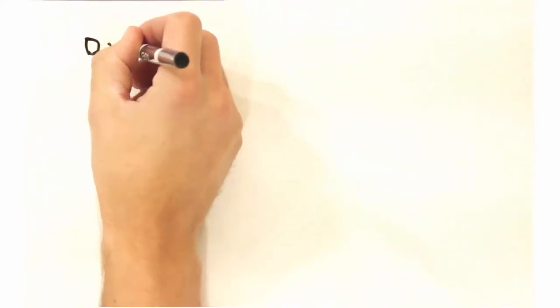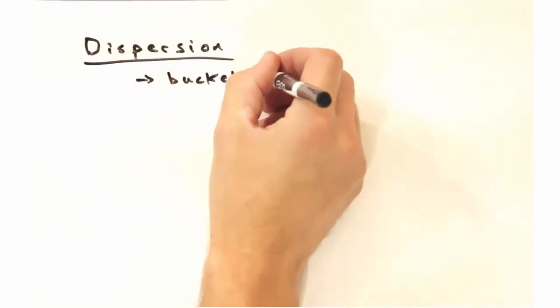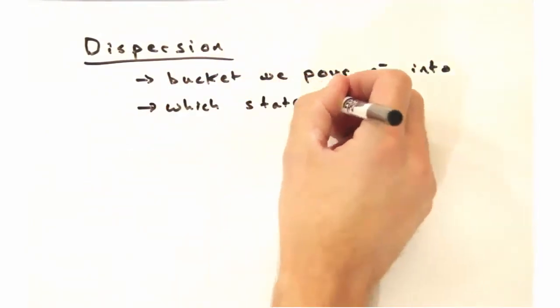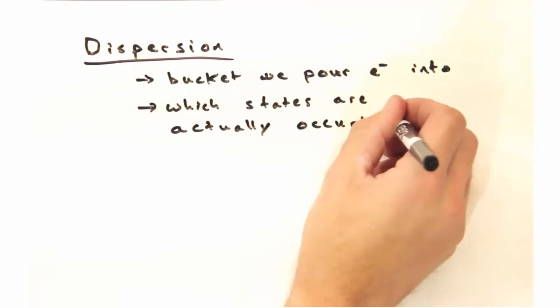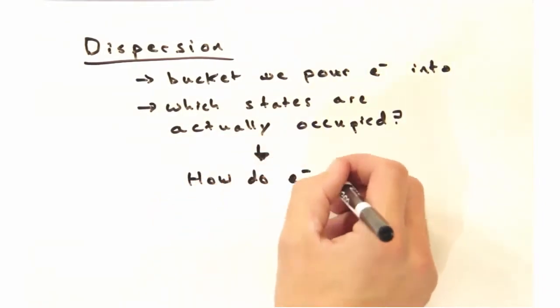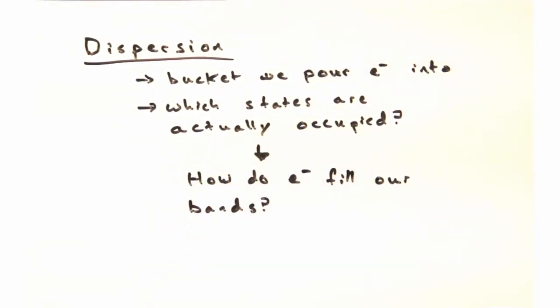Okay, we've been talking a lot about the dispersion, but we know the dispersion is just the bucket we pour the electrons into. Yeah, so we really need to think about which states in the dispersion are actually occupied. To that end, we're going to do some rather important bean counting in this episode that addresses how our electrons fill our bands.